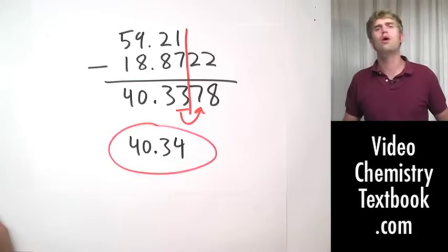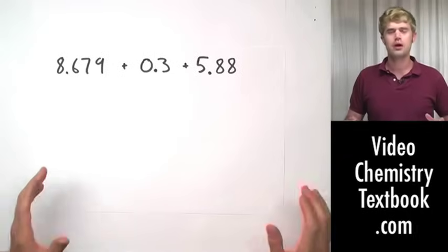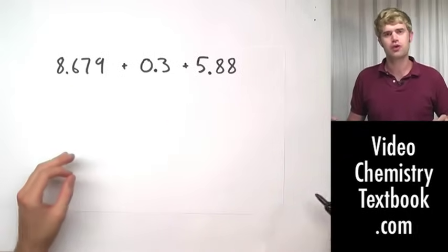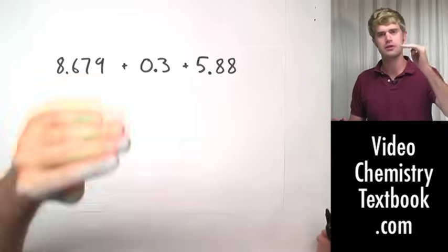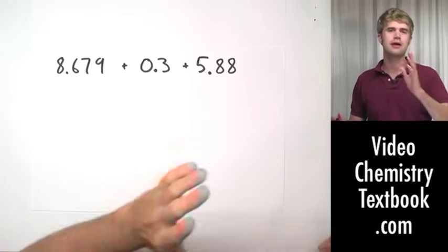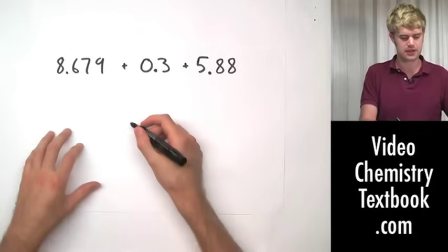I'm only going to do one more example because I think this is probably making a lot of sense. Sometimes addition and subtraction problems are written like this, horizontally. When I'm given a problem like this, I find it easier to stack the numbers up vertically on top of each other, just so I can see how the decimal places relate to each other.